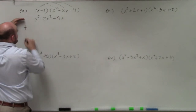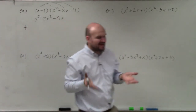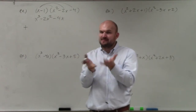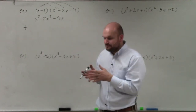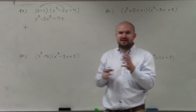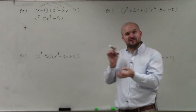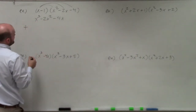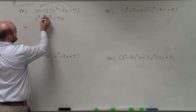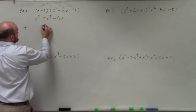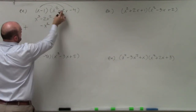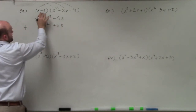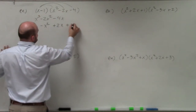Then I add that to my next product. One issue with the vertical method is spacers — that can get confusing, so leave enough room. In this case we won't have that problem. We have -1 times x², which is -x²; -1 times -2x, which is positive 2x; and -1 times -4, which is positive 4.